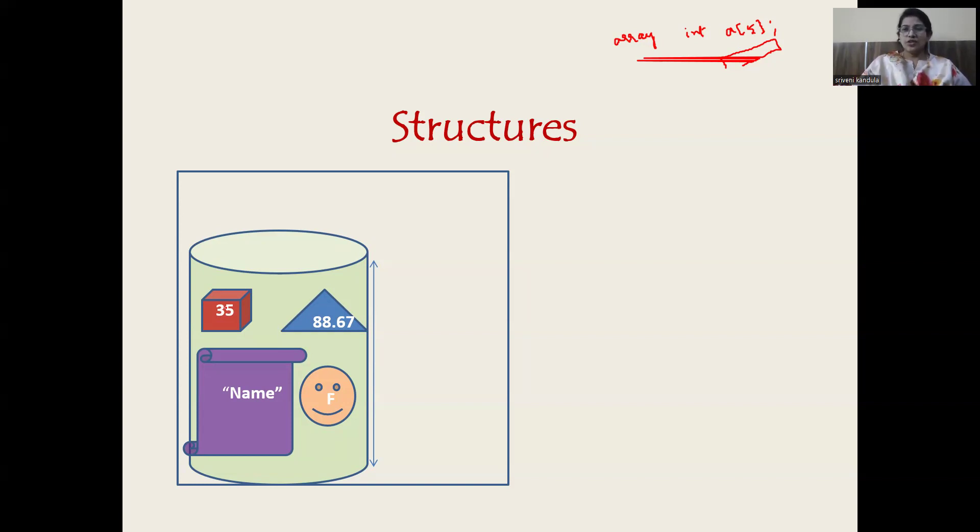Homogeneous is an array. Heterogeneous data elements belong to a structure. So the definition of a structure I can give is: collection of logically related heterogeneous data elements grouped under a single name. This is a structure.